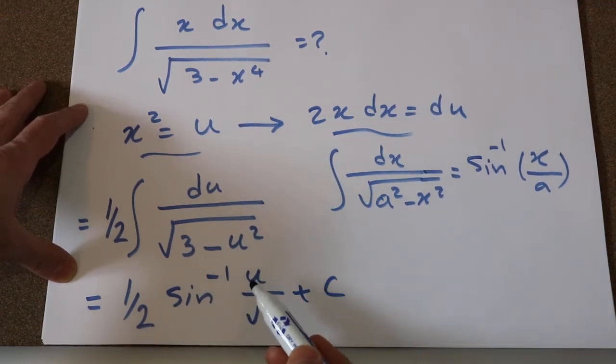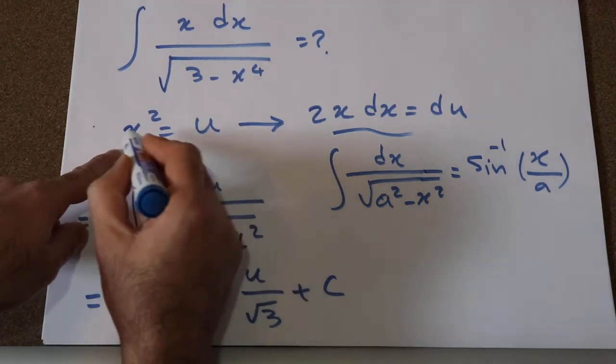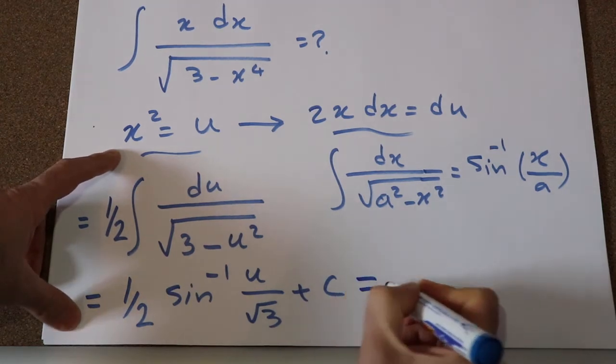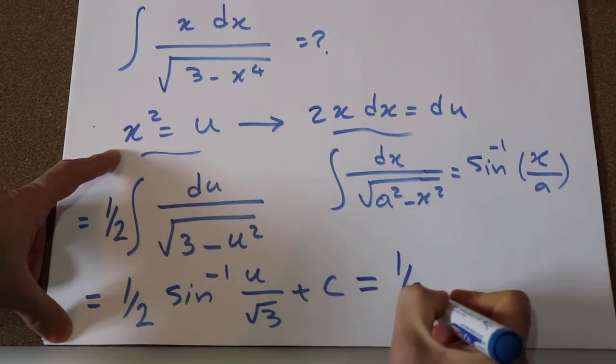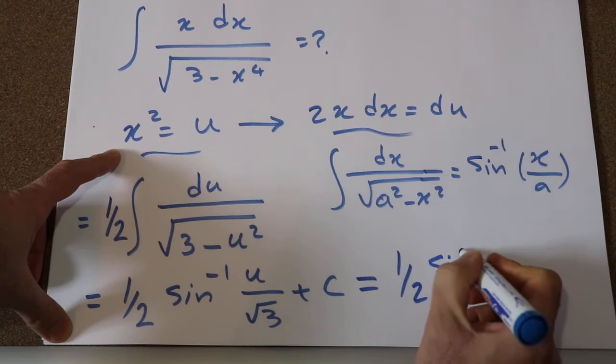So here all you need to do is to substitute this parameter u with the definition of u, which is equal to x squared. Therefore, this one will be equal to 1 divided by 2 sine inverse,